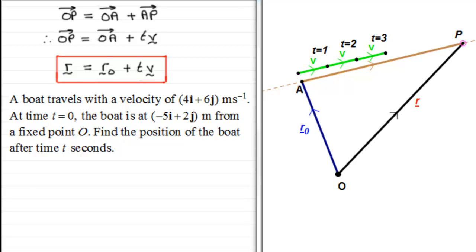So if we let the position vector of the boat be R after time t seconds, then it's going to equal the initial position of the boat, which was minus 5i plus 2j. So just write that in as minus 5i plus 2j. And then it's going to be plus t times the velocity vector. And the velocity vector is 4i plus 6j meters per second. So 4i plus 6j. And that's essentially it.